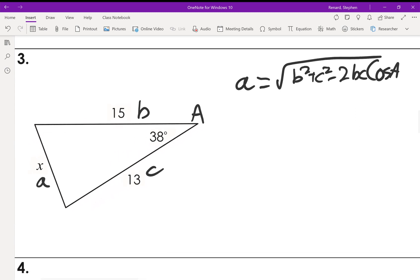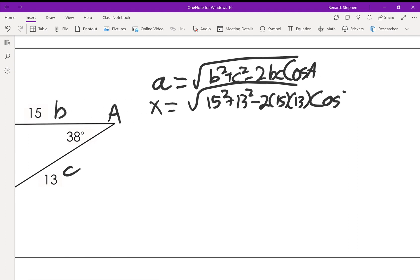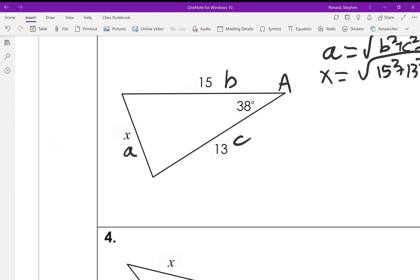So we're going to just plug in what we got here. x is going to equal the square root of 15 squared plus 13 squared minus 2 times 15 times 13 times the cosine of 38. Now I'm looking at this here and I know that all three of these have to add up to 180 degrees, all three angles. So I'm going to guess that this right here is probably the smallest angle.